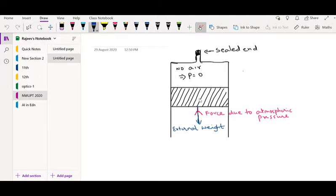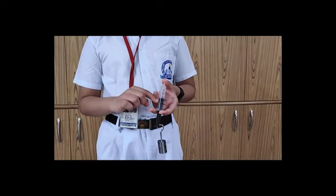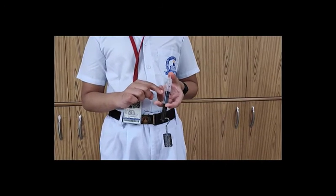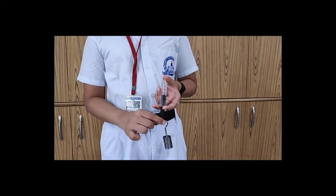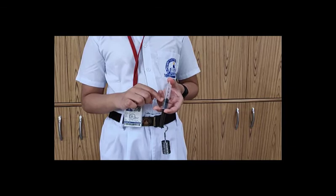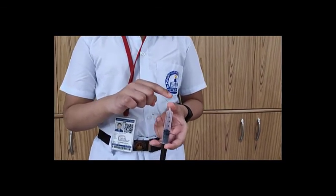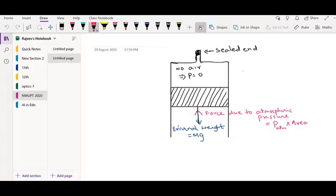then the plunger stays wherever I leave it. When these two are equal, and I pull it down, it stays there, even though the open end is closed. If I know the external weight and the area of the syringe, then I can find the atmospheric pressure. Thank you everyone.